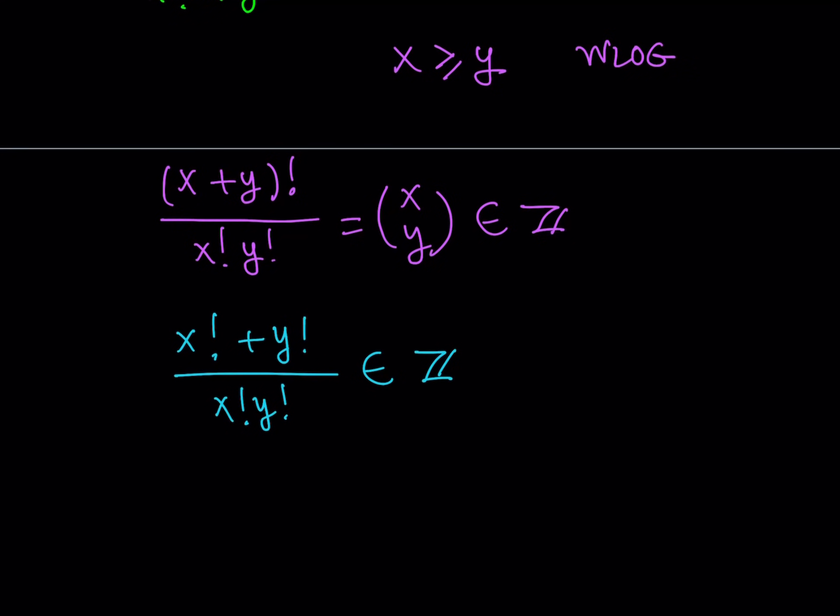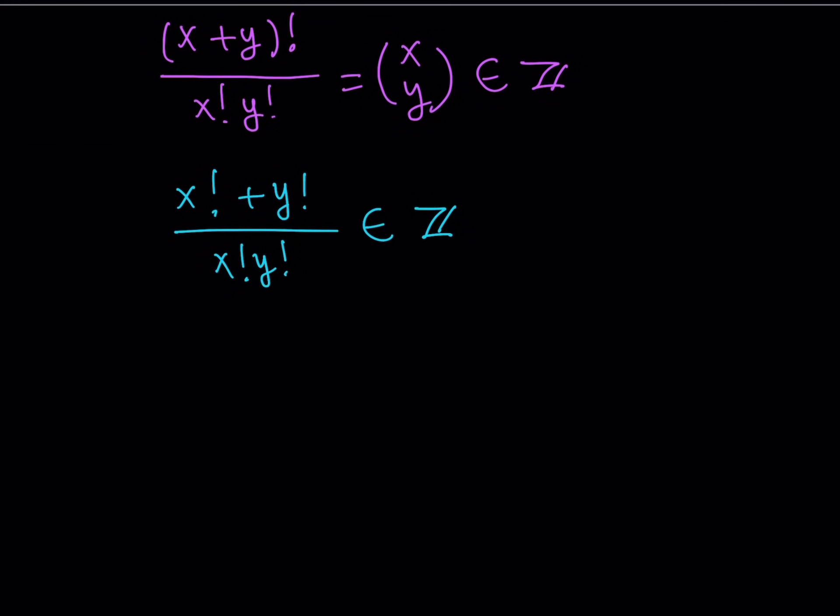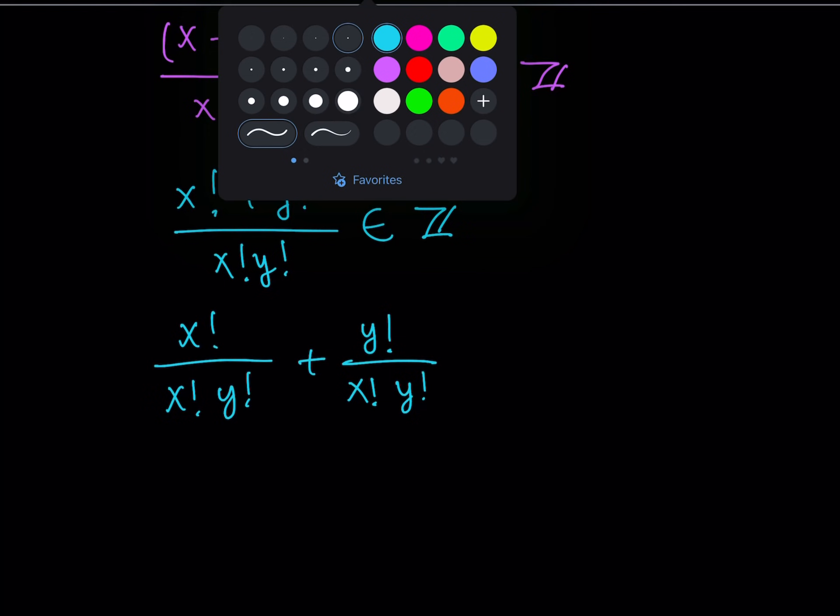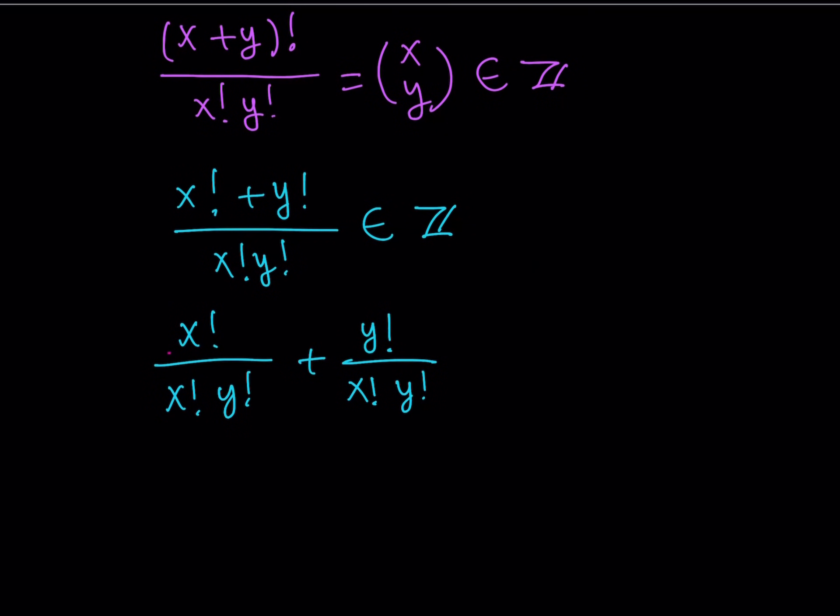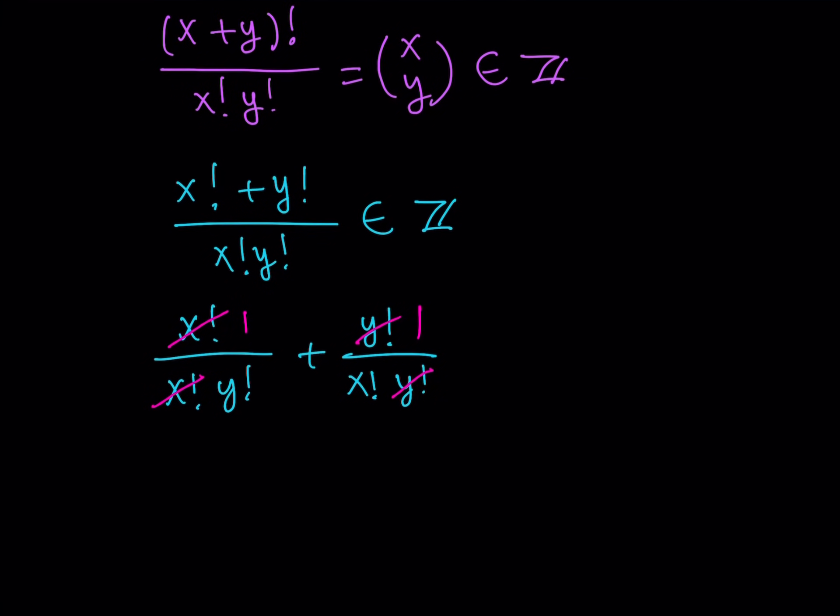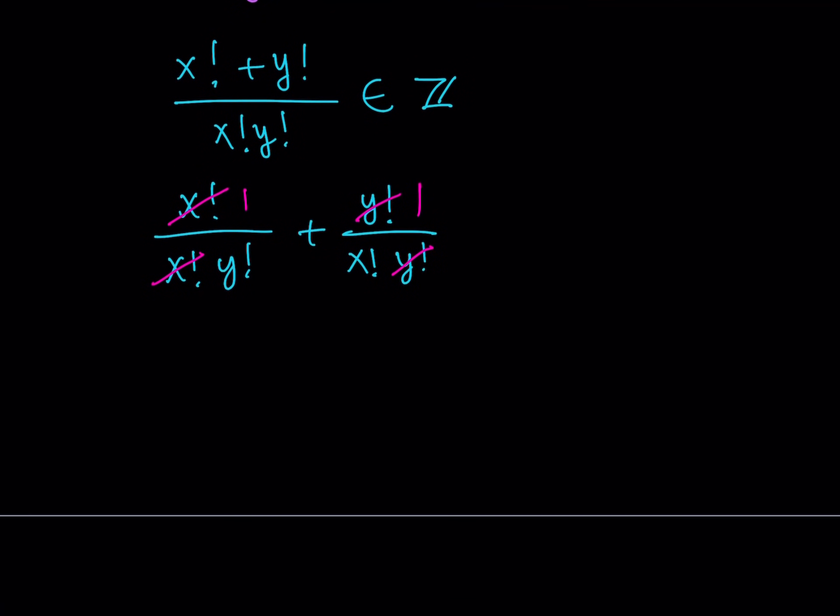Now, how does that help us? Well, first of all, think about it like you can separate these into two pieces, right? It's kind of like the sum of two fractions with a common denominator. I can just go ahead and separate these like x factorial divided by this plus y factorial divided by this. What can I do next? Well, I can simplify this. Because x factorial cancels out and I end up with one. Y factorial cancels out and I end up with one. And I still know that this is an integer. I can write it as one over x factorial plus one over y factorial. And we know that this is supposed to be an integer.